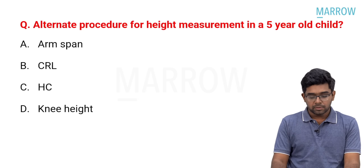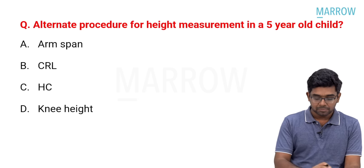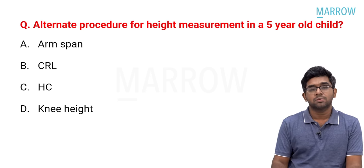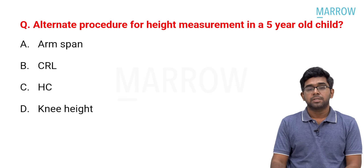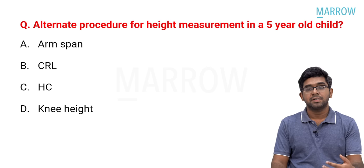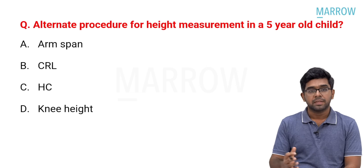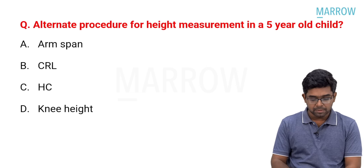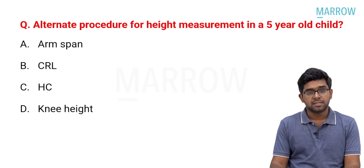Coming to the second question: alternate procedure for height measurement in a five-year-old child. This was a picture-based question where they put up a picture of a stadiometer and asked for an alternate procedure. The options were arm span, CRL which is crown-rump length, HC which is head circumference, and knee height measurement.